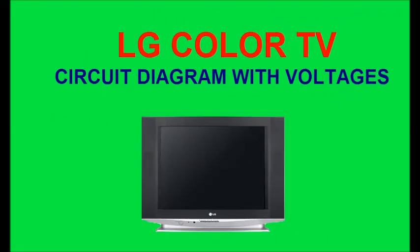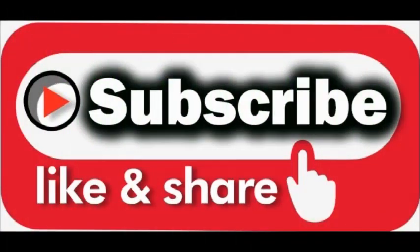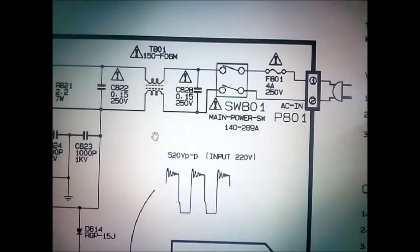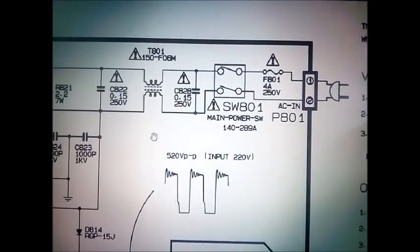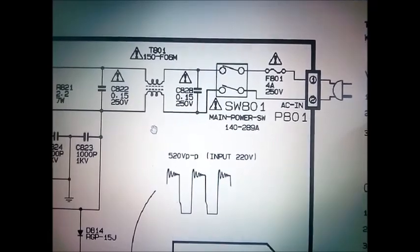Dear friends, today we see the LG Color TV circuit diagram, model number CF21D70B. Subscribe, please subscribe, like and share. First we see the power supply problems. First we check the fuse, fuse is okay.